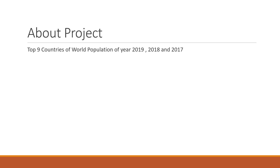In this video we will build a project that shows the top nine countries of world population for the years 2019, 2018, and 2017. At the top of the project there is a selector — by default it is set to 2019. If you change the selector from 2019 to 2018, the graph will update accordingly.